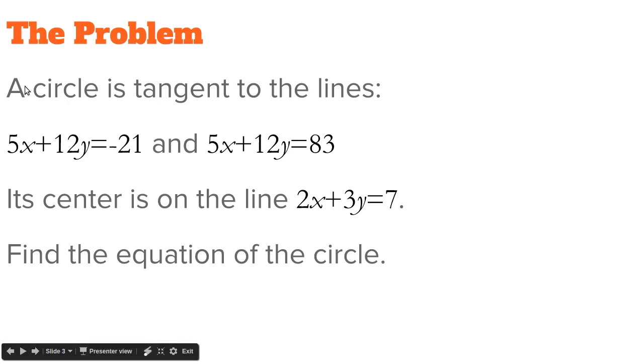So today we are doing Problem 3. A circle is tangent to the lines 5x plus 12y equals negative 21 and 5x plus 12y equals 83. Its center is on the line 2x plus 3y equals 7. Find the equation of the circle.